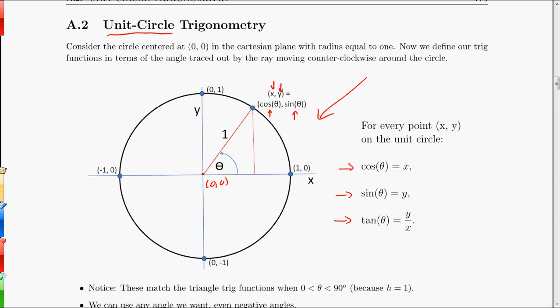The nice thing about this is if you're in this first quadrant, this matches the triangle trig. Because this distance right here is x, and this distance here is y. So I really have a triangle where the adjacent side length is x, and the opposite side length is y.